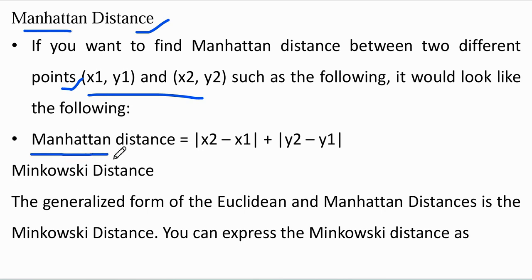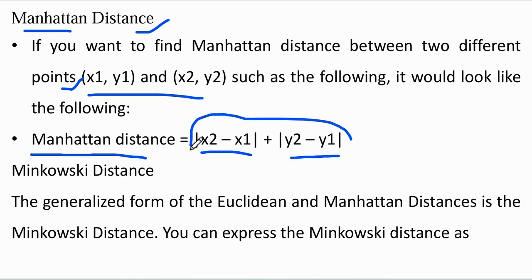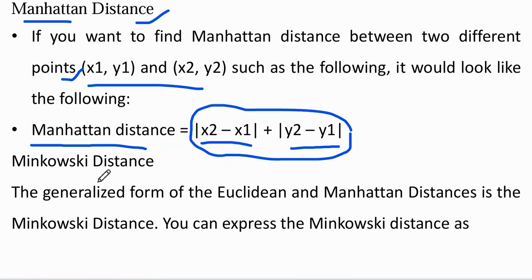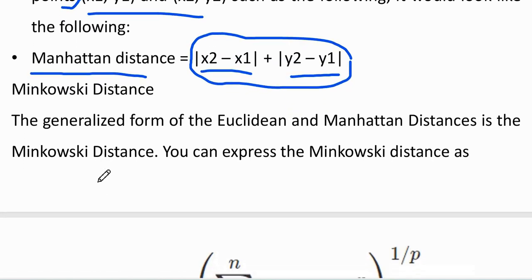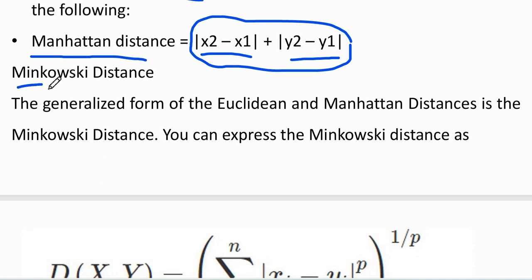The Manhattan distance formula is modulus of (x2 minus x1) plus (y2 minus y1) modulus. Another type of distance is Minkowski distance. By using Minkowski distance, we can also generate the distance formula for Manhattan distance and the distance formula for Euclidean distance.